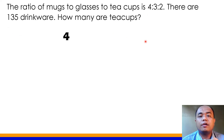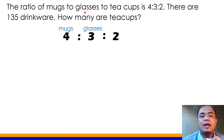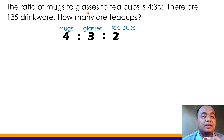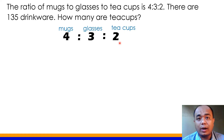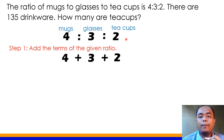We have 4 is to 3 is to 2. Yung 4 stands for mugs, yung 3 stands for glasses, at yung 2 stands for teacups. Ang hinahanap natin ay ang actual na number ng teacups. Step 1: add the terms of the given ratio — 4 plus 3 plus 2. The sum is 9.